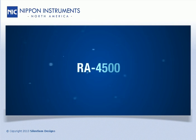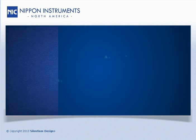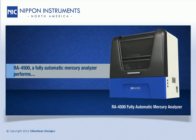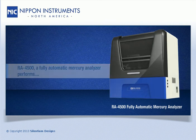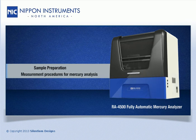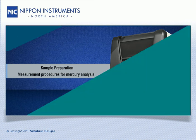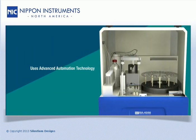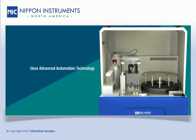The model RA4500 is a fully automatic mercury analyzer that performs both the sample preparation and measurement procedures for mercury analysis. It uses advanced automation technology to allow for unattended completion of the sample digestion and analysis of mercury in liquids and other homogeneous sample types.